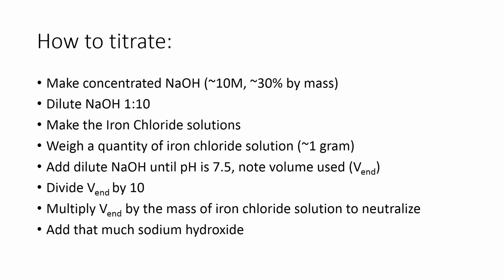We're going to make some very concentrated sodium hydroxide, about 30% by mass. Dilute that 1 to 10 as our titrant. We're going to make our iron chloride solutions that I just showed. Weigh a quantity of that iron chloride solution, about 1 gram. Use your dilute sodium hydroxide to titrate to pH 7.5 and note the volume. Divide that by 10 because we're going to use the concentrated stuff and add that amount as appropriate to the mass of the iron chloride solution to neutralize it.